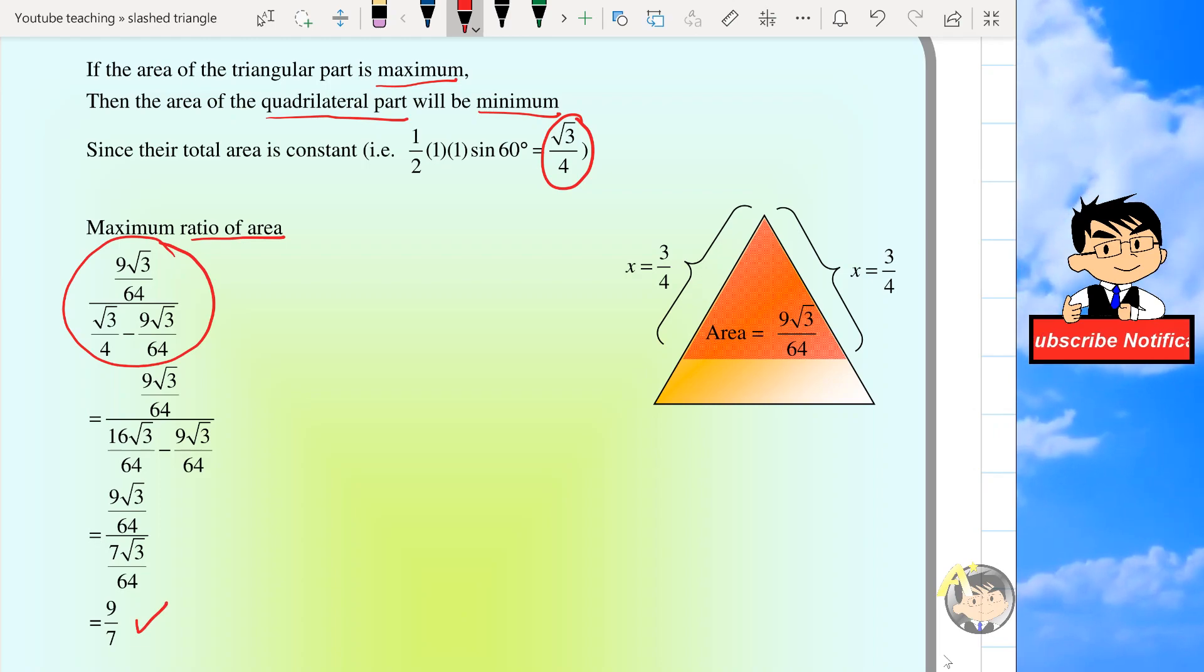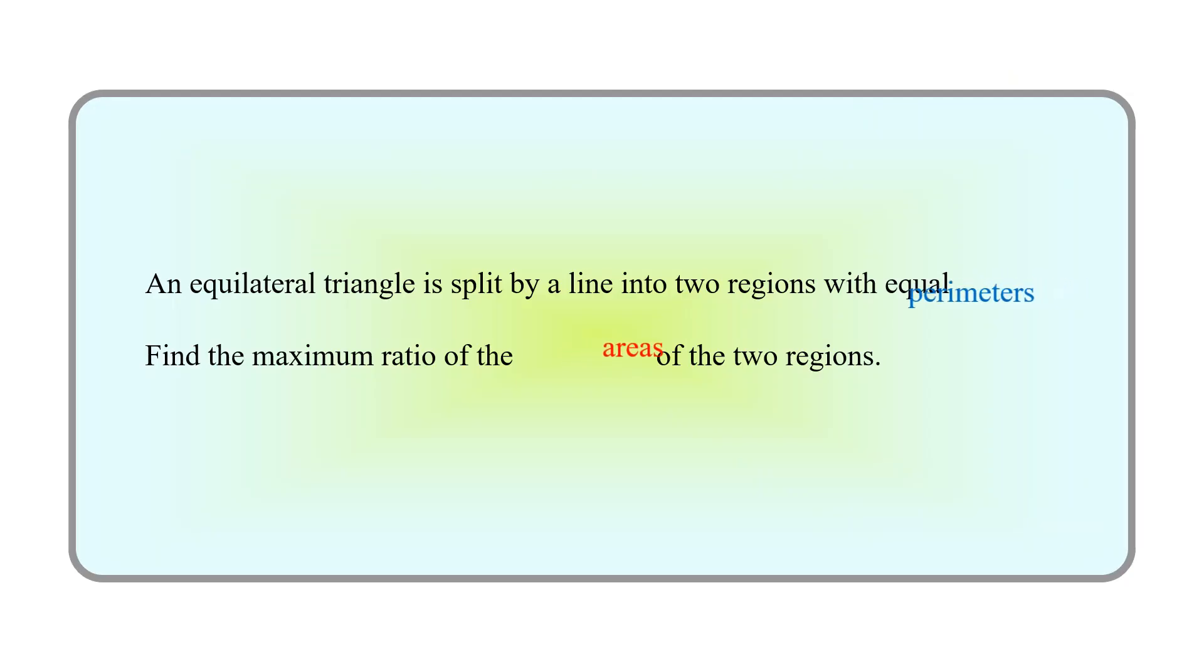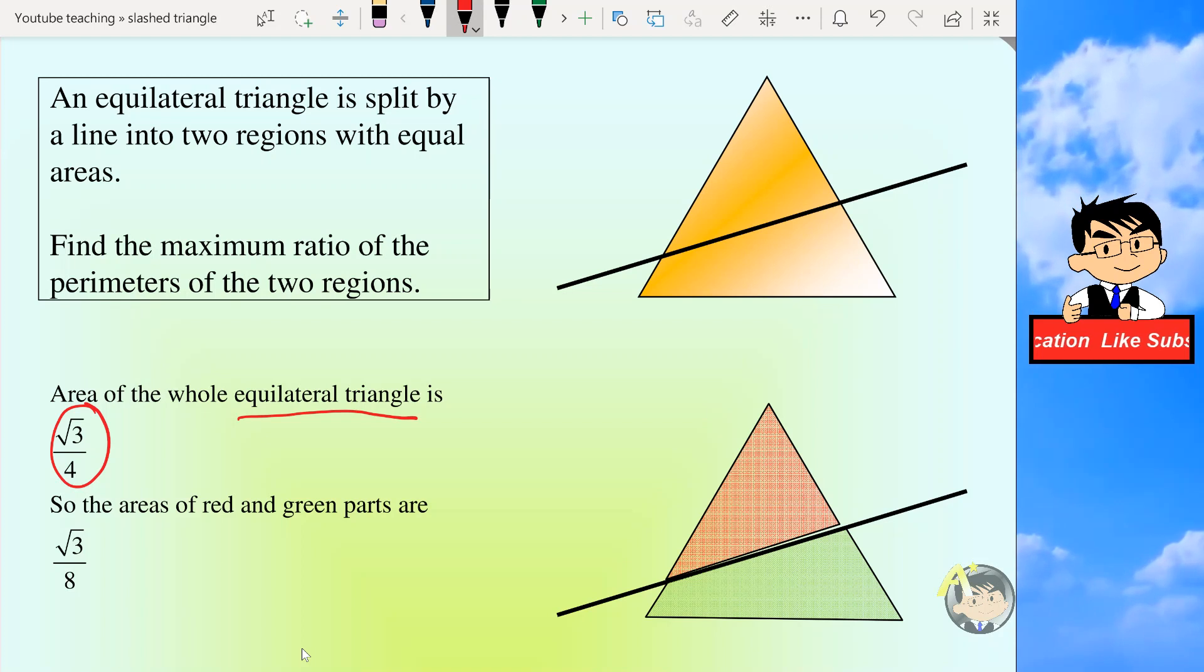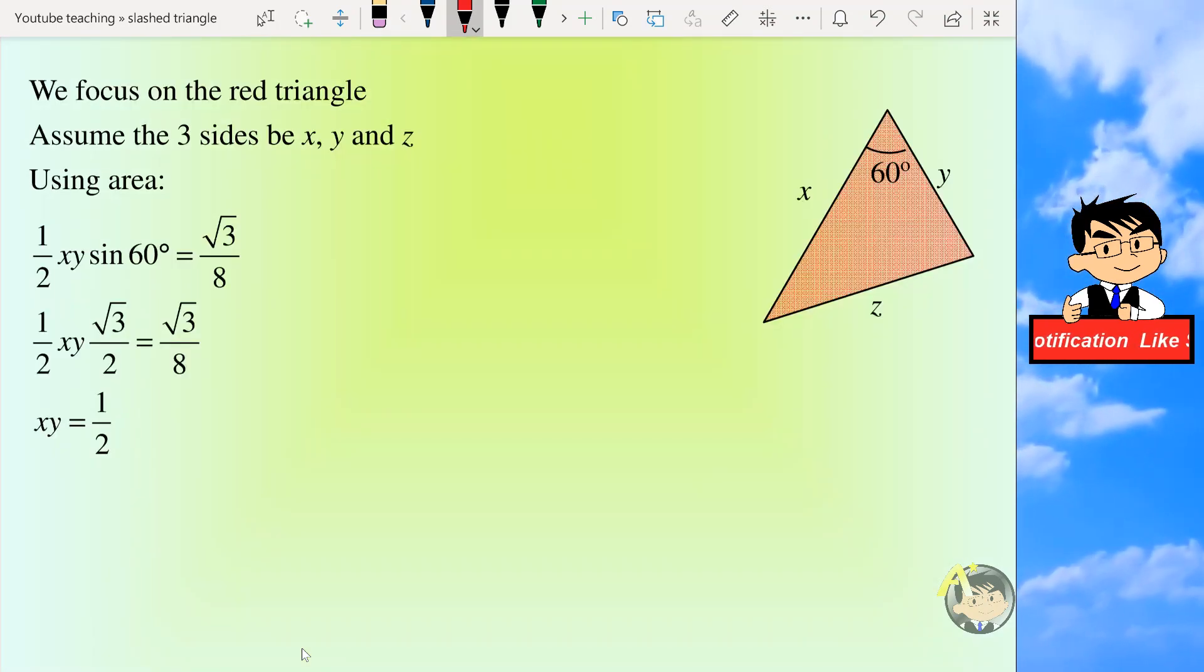The reason I chose this problem is because if we interchange the words perimeters and areas, we will get an entirely new problem. Now let's start again. We know that the total area of the equilateral triangle is root 3 over 4. So if we half it, then we will get the red and green parts, the area above with root 3 over 8.